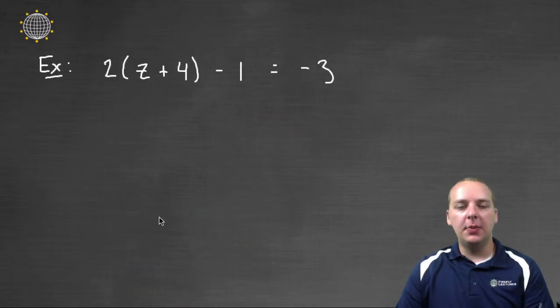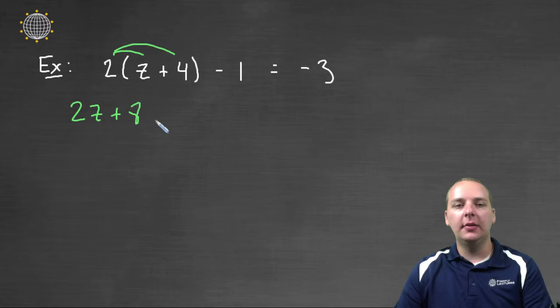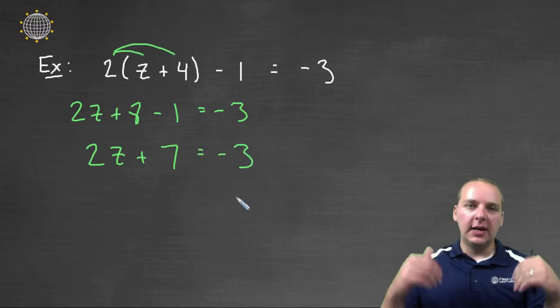Here's the next example: 2(z + 4) - 1 = -3. So step one, as before, was to simplify both sides. We'd have 2z + 8 - 1 = -3. Then we'll combine any like terms, like the plus 8 and the minus 1, gives us 2z + 7 = -3.